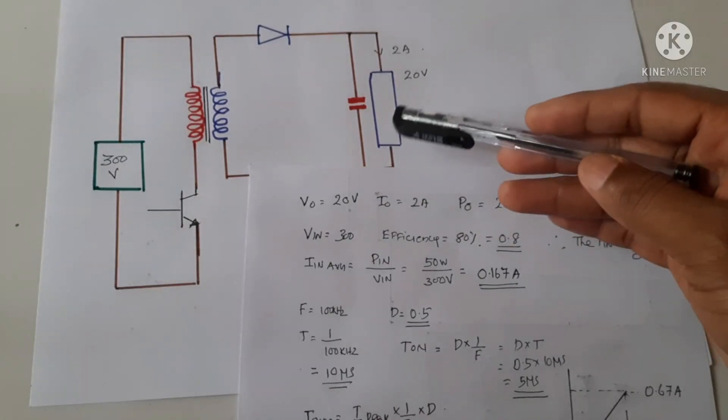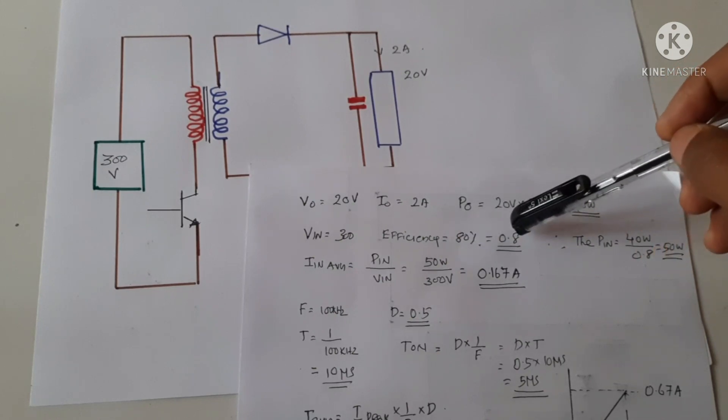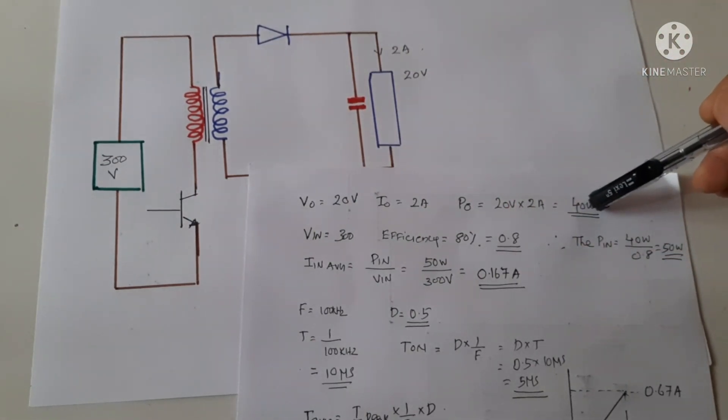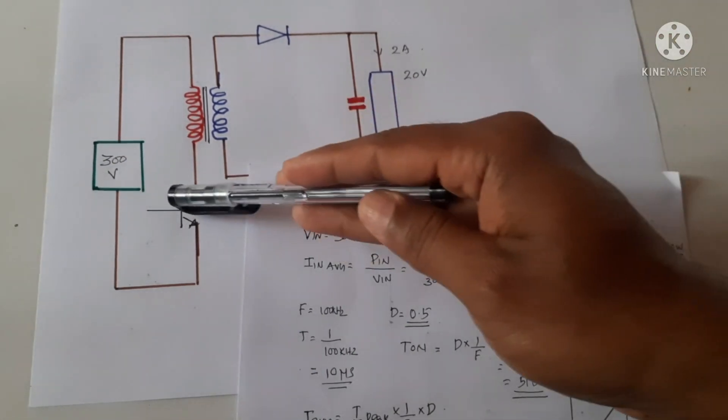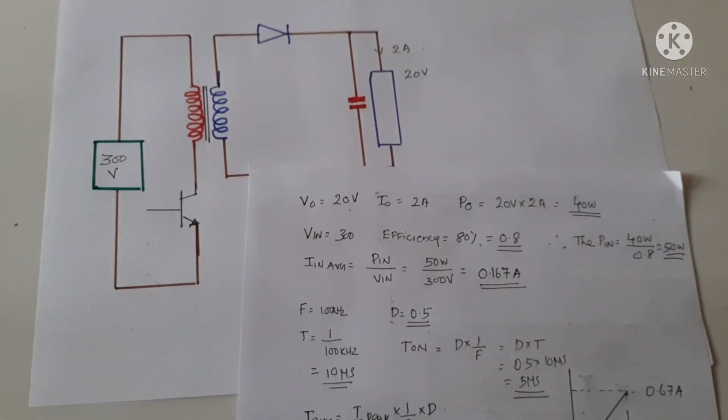Usually the flyback converter has efficiency of 80%, that means 0.8. Then the power at the input will be the output power, 40 divided by the efficiency, which gives the input power. It is around 50 watts of power needed, then only 40 watts of power will be available at the output.